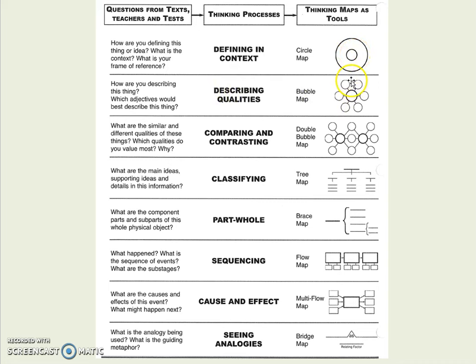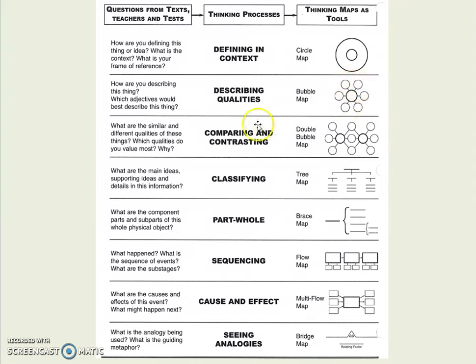A bubble map — you only use adjectives in the circles around it because it is describing quality. So you could put a character and a story in the middle and all the words that describe that character. You could put what an integer is and all the words that describe an integer, as long as they're adjectives.